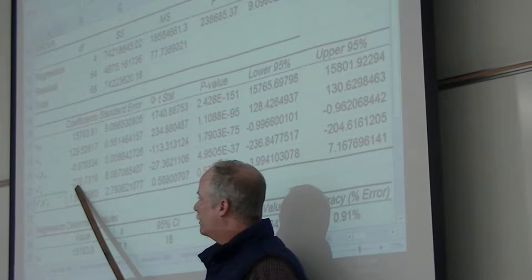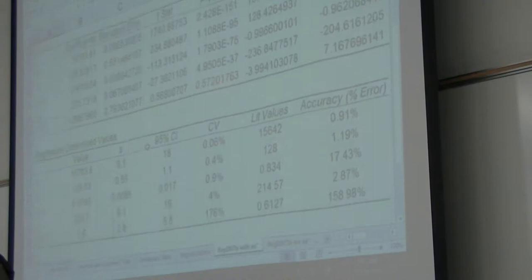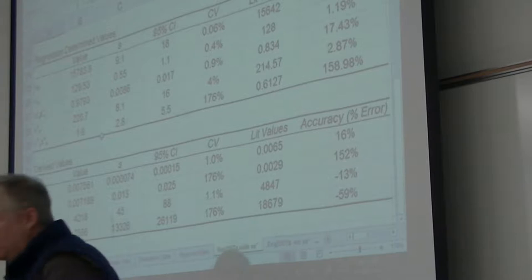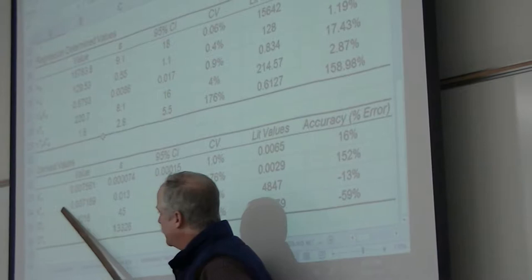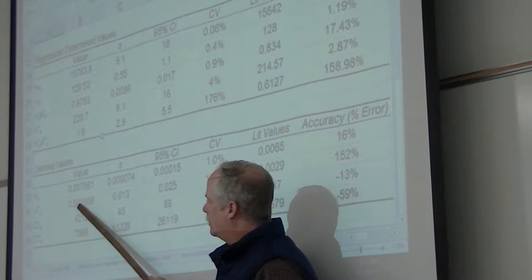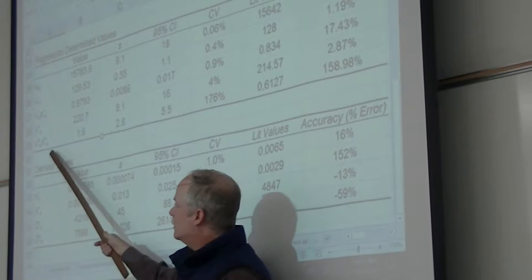What we want to do is take this number and divide nu_e out of it. Down here, these are the regression-determined values. We take these regression values and divide that nu_e term out, and we end up with the xe term. This is the term that's tabulated in the various literature sources for the anharmonicity constant. The anharmonicity constant is not nu_e·xe — that's the anharmonicity constant times the vibrational frequency.